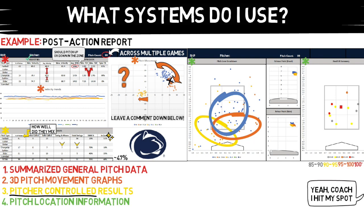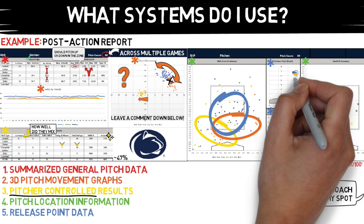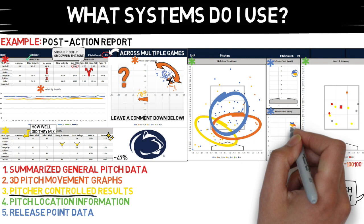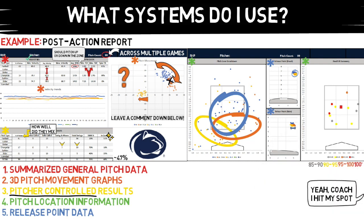The last portion of this report includes release point information. The top graph illustrates how high off the ground and how far left and right from the center of the rubber the ball is released. The bottom graph tells me how high off the ground and how far out in front — their extension — the ball is released. To me, the top graph is the more important one because this is what a hitter is going to see. This athlete does a pretty good job releasing each pitch from a similar slot — you like to see all of these colors stacked on top of one another. The extension graph on the bottom helps paint another picture; if extension is severely different between pitch types, this may indicate the athlete is manipulating the body too much to create certain movement patterns, which could be picked up by hitters.